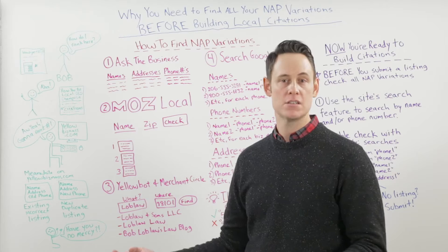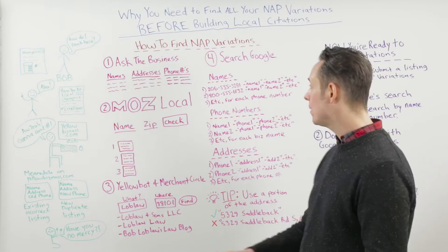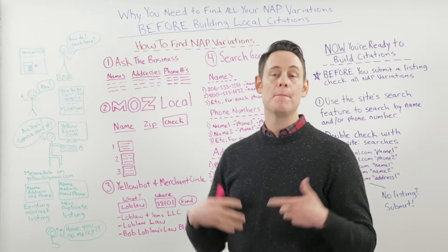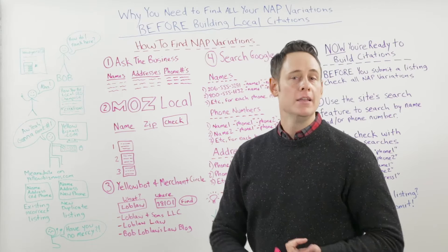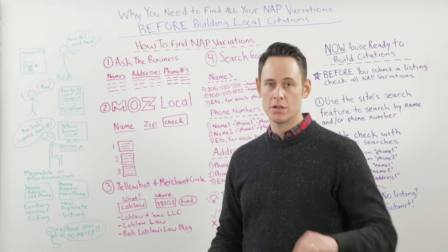Before I get into it, I want to cover a couple of definitions quickly. NAP stands for name, address, and phone number, and a citation is basically a mention of your name, address, and phone number somewhere on the web. Typically you'll see that on sites like yellowpages.com or yelp.com or superpages, but you can find them on any kind of sites — blogs, newspapers, whatever. Anywhere your name is mentioned, that's a citation.